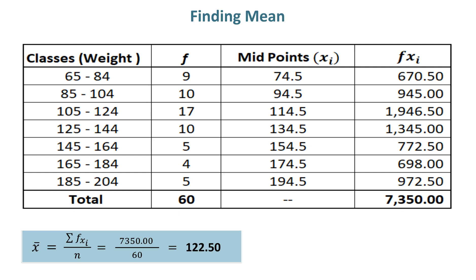For example, the first midpoint is 74.5 which you will get by adding 65 and 84 then dividing it by 2 to get 74.5.